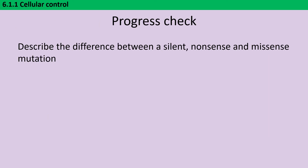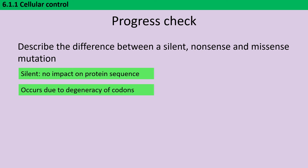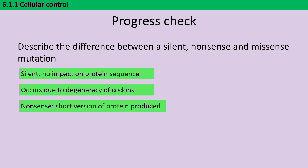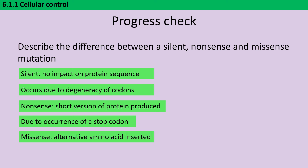To summarise the three types of point mutation by sequence effect: a silent mutation has no impact on the protein sequence because of the degeneracy of codons — we've changed a base that doesn't affect which amino acid is inserted. A nonsense mutation produces a short version of the protein because a stop codon has been introduced. A missense mutation is where an alternative amino acid is substituted instead, and this could be either conservative or non-conservative.